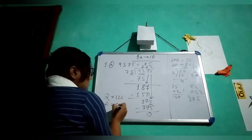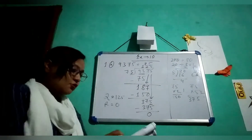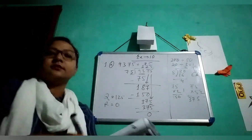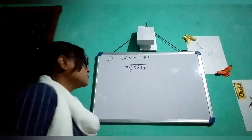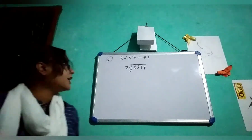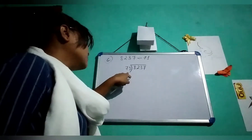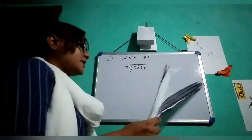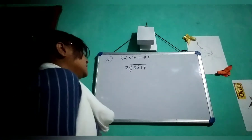The remainder is 0. So this is 1A. Let me do one more question — number C. The next question is 8,237 divided by 71. 71 will be the divisor and 8,237 will be the dividend.